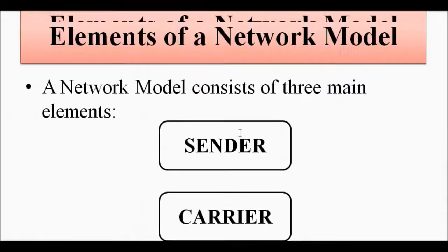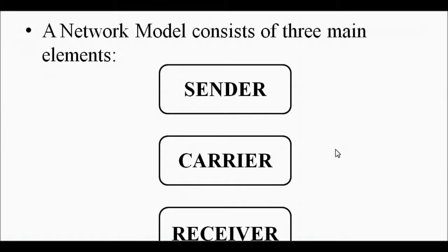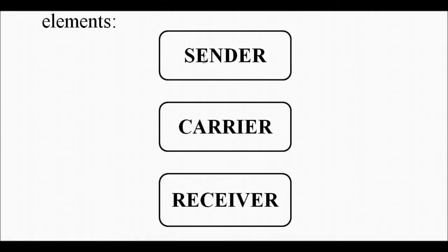The network model consists of three main elements: the sender, the carrier, and the receiver. The sender is the one which is transmitting data or information. The receiver is the one which receives the data. The carrier transmits the data by carrying it from the sender to the receiver. These are the basics of communication.